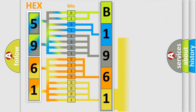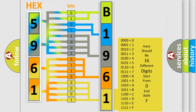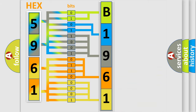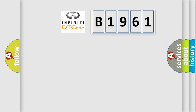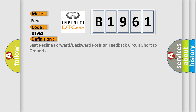A single byte conceals 256 possible combinations. We now know in what way the diagnostic tool translates the received information into a more comprehensible format. The number itself does not make sense to us if we cannot assign information about what it actually expresses. So, what does the Diagnostic Trouble Code B1961 interpret specifically for Infiniti car manufacturers?